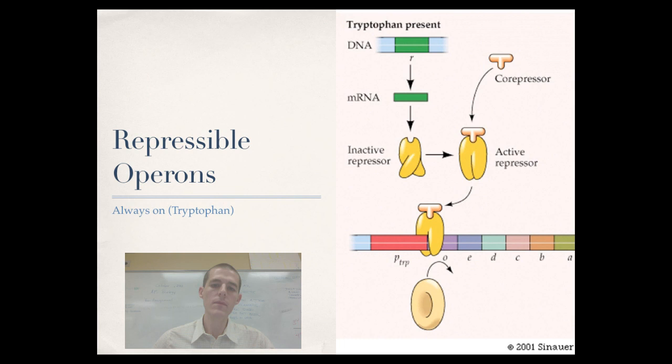All right, this kind of pathway is known as a repressible operon because it is usually on, but when tryptophan is present, it will shut that down. It will repress the pathway. So a repressible operon is a pathway that is usually on, but when the molecule that's being made is present, it shuts down the pathway so that you don't waste energy making whatever needs to be made.